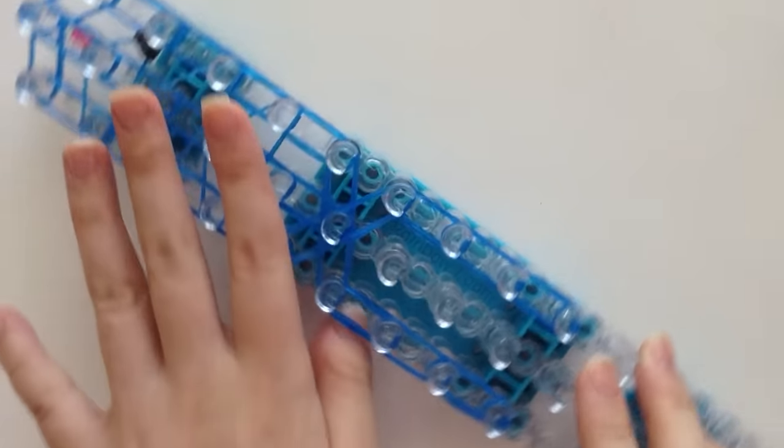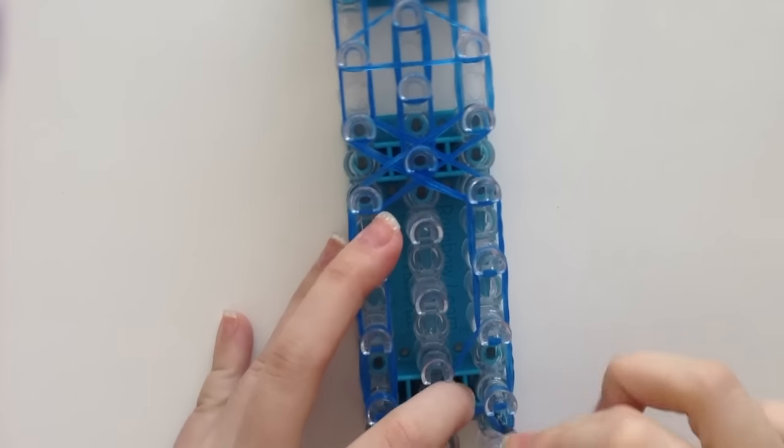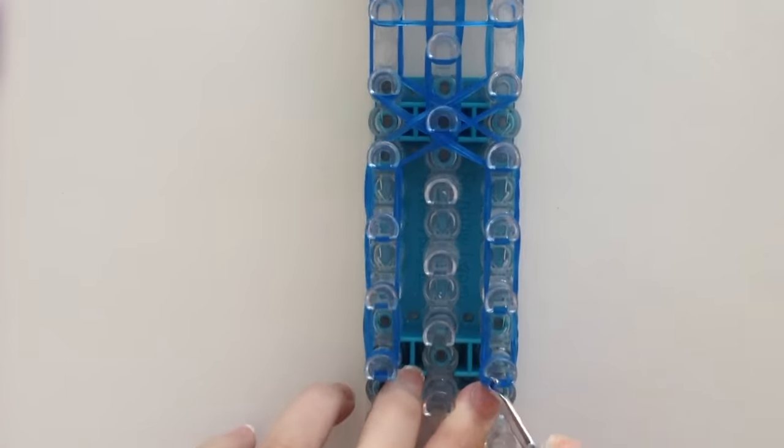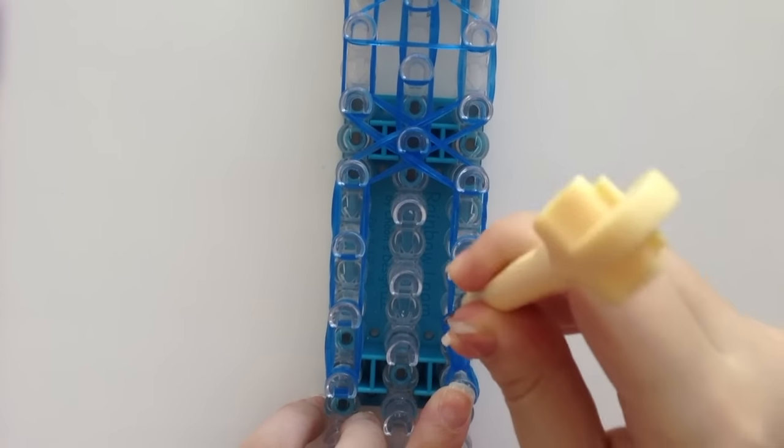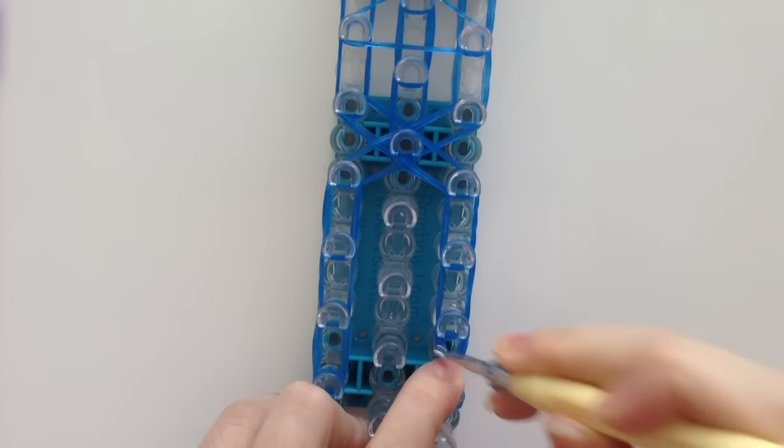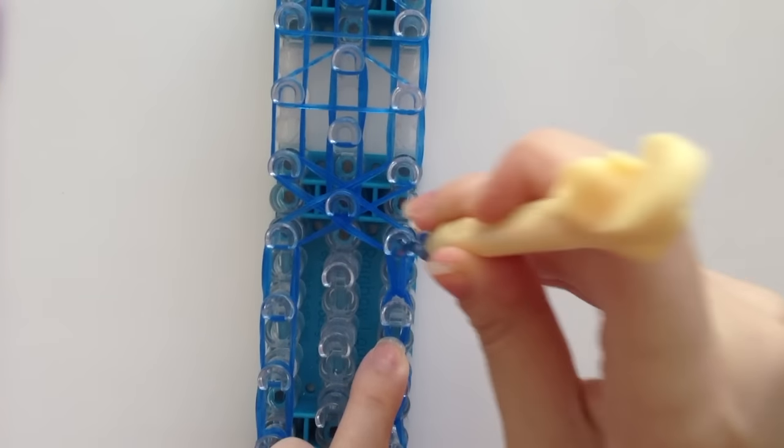Now turn your loom around and we can begin hooking. I'm going to begin on this side here and of course go under the cap band. And grab those bottom two bands and bring them forward. And continue doing that.